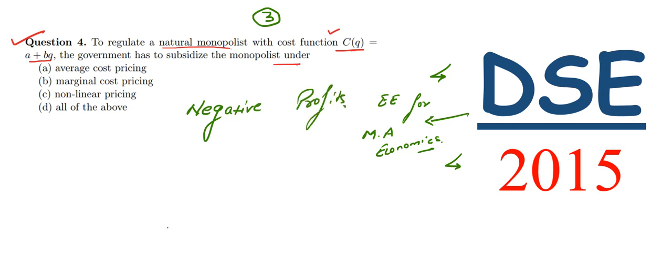As you can see in the options, we have average cost pricing, marginal cost pricing, non-linear pricing, and all of the above. From the first two options, we know that marginal cost pricing is always less than the average cost pricing.